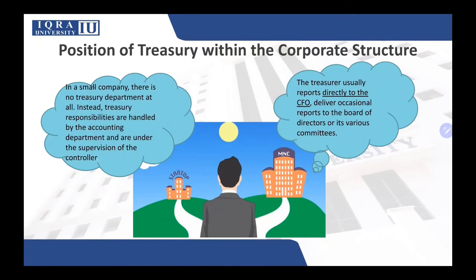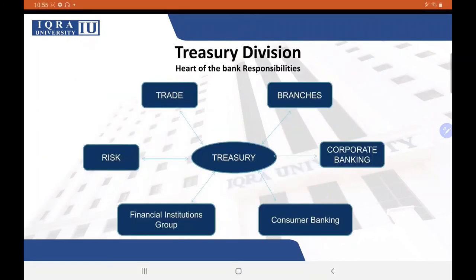However, as the company grows, the need for specialized treasury staff also grows. This typically begins with a treasurer who personally handles all the responsibilities of the department, and gradually more specialized staff are added as the business keeps growing to handle more complex transactions such as cash pooling and hedging. Personnel are added either as transaction volume increases or when management decides they need a centralized treasury operation. Once the treasurer position is created, the treasurer usually reports directly to the CFO and may also deliver occasional reports to the board of directors.